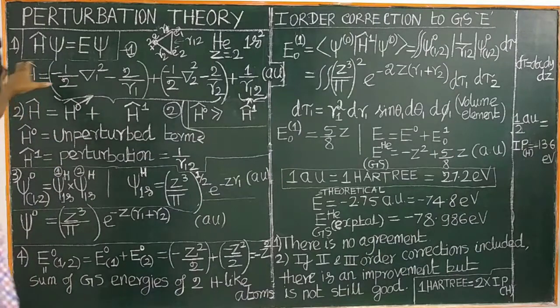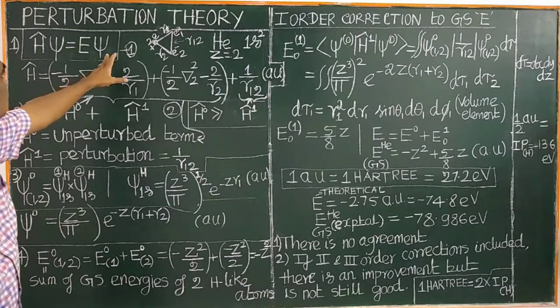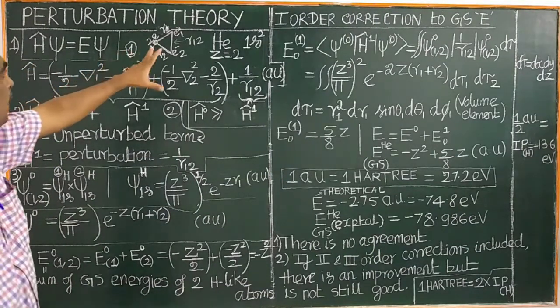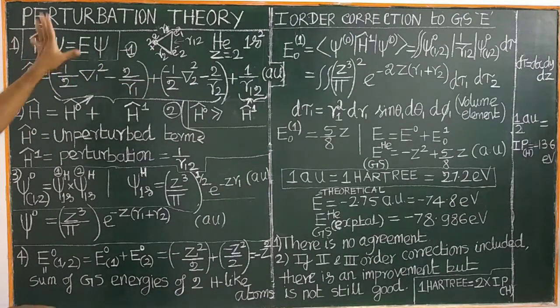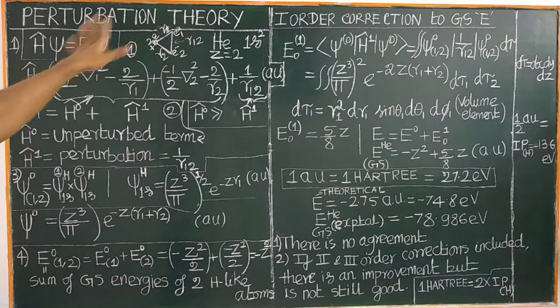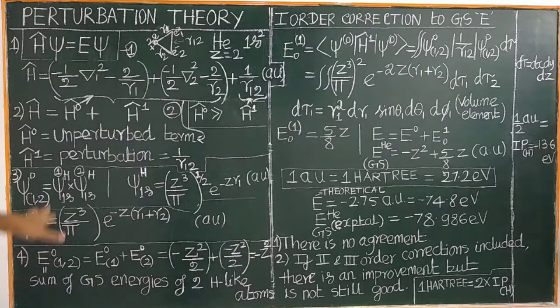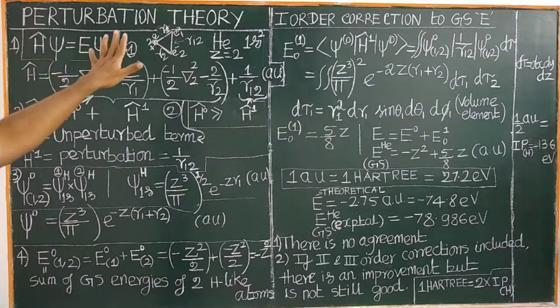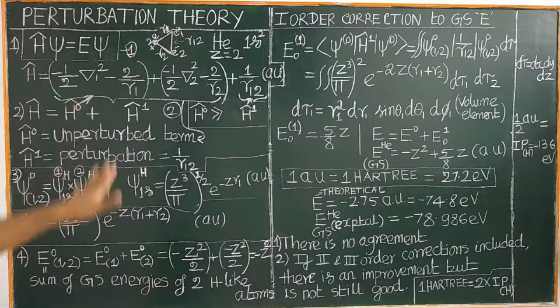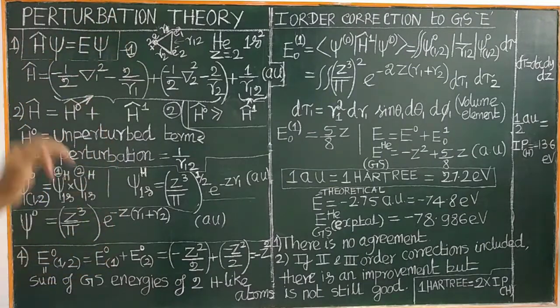The Schrödinger wave equation for helium atom is written as, in simplified form, H-hat psi equal to E psi. This is the Schrödinger wave equation or eigenvalue equation.